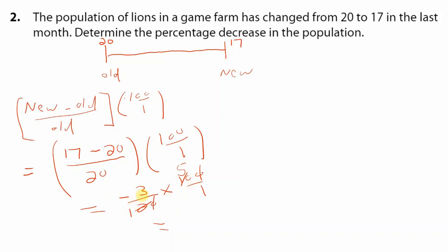So at the top we have negative 3 times 5, which is negative 15. Negative times positive is a negative. 1 times 1 is 1. If we divide by 1 it doesn't change the top. So we can say it's negative 15%, which means it is a decrease of 15%. So the population of lions decreased by 15%.